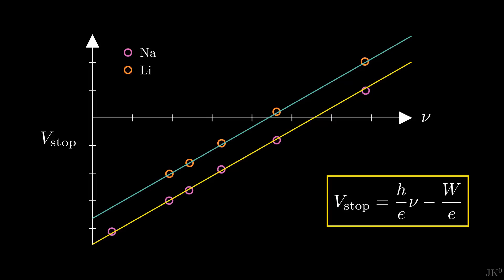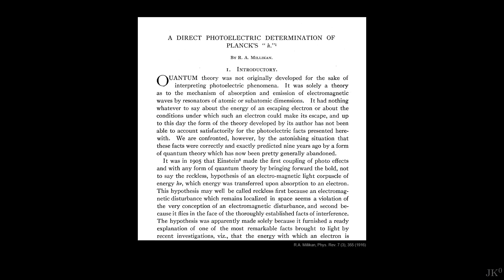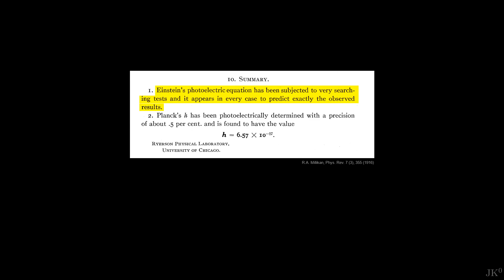Millikan defended the idea that his experiment confirmed Einstein's formula of the photoelectric effect, but not the reckless hypothesis behind the formula. And he spent years advocating for an alternative theory that could produce Einstein's formula without Einstein-like quanta. Such a theory never arrived. In his now famous paper, he shows his discomfort with the implication of the results, but ends with a truthful summary. Einstein's photoelectric equation has been subjected to very searching tests, and it appears in every case to predict exactly the observed results.